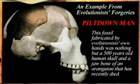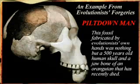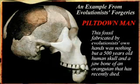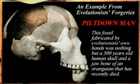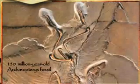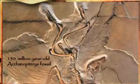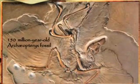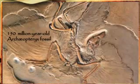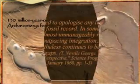For that reason, in an attempt to prove their theories, some evolutionists have attempted to manufacture their own fossils, and these have later been realized to be forgeries or distortions. The Earth's fossil layers actually prove that living things have existed in their perfect forms ever since they were first created.